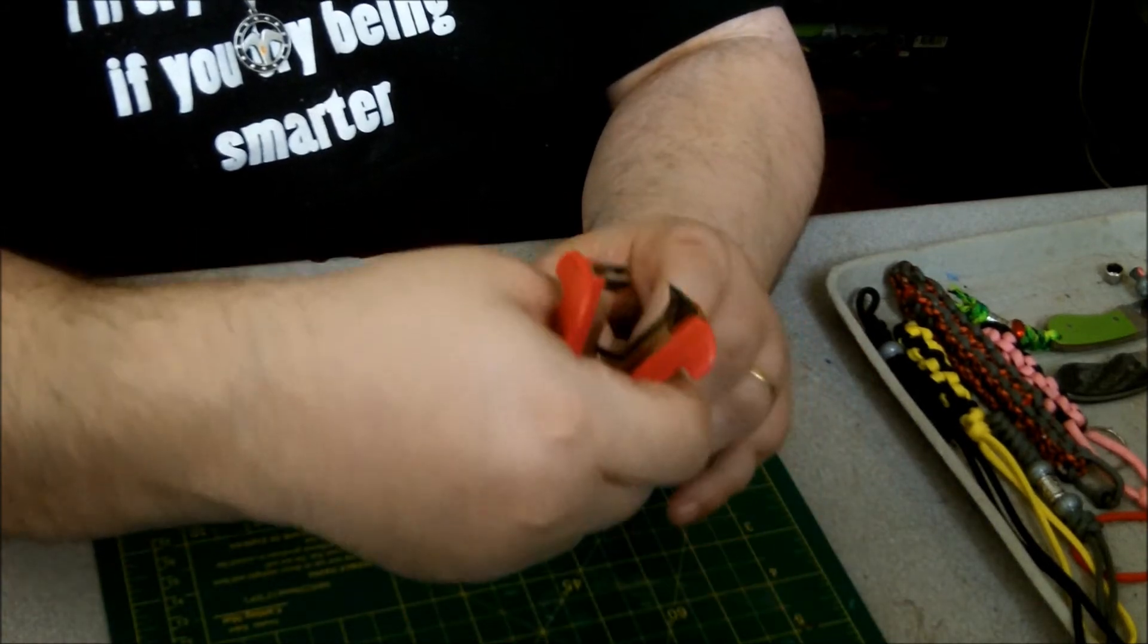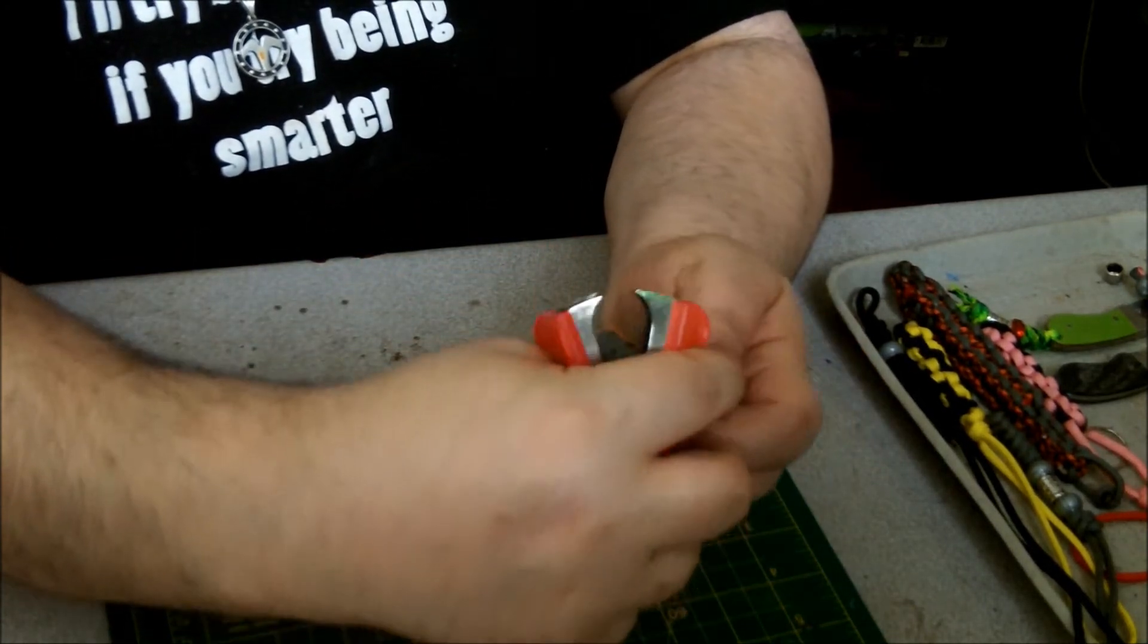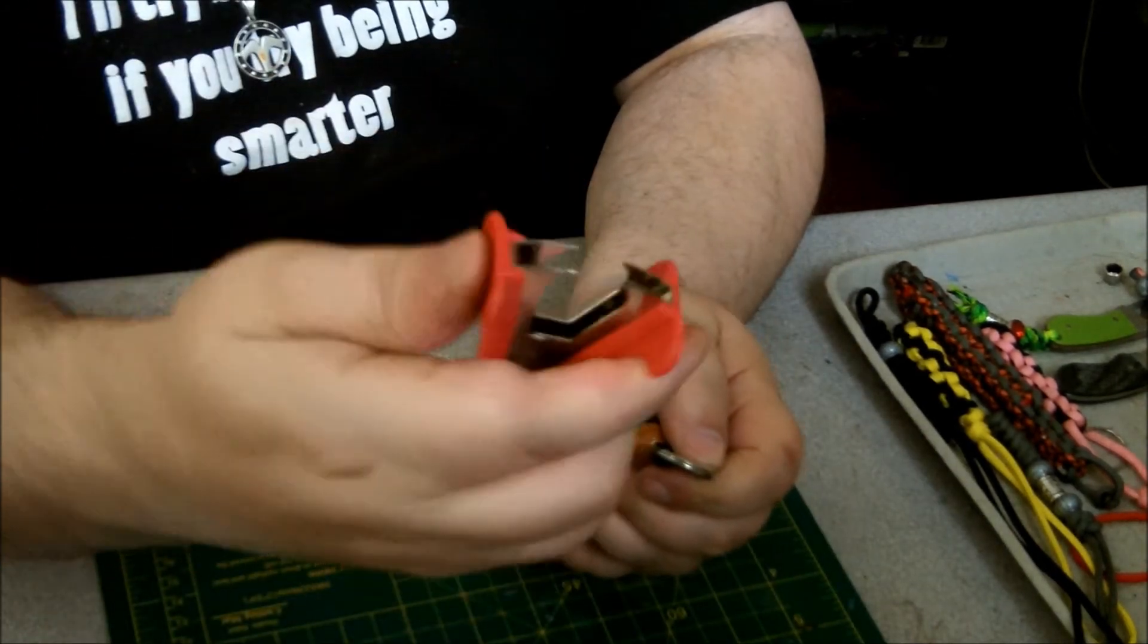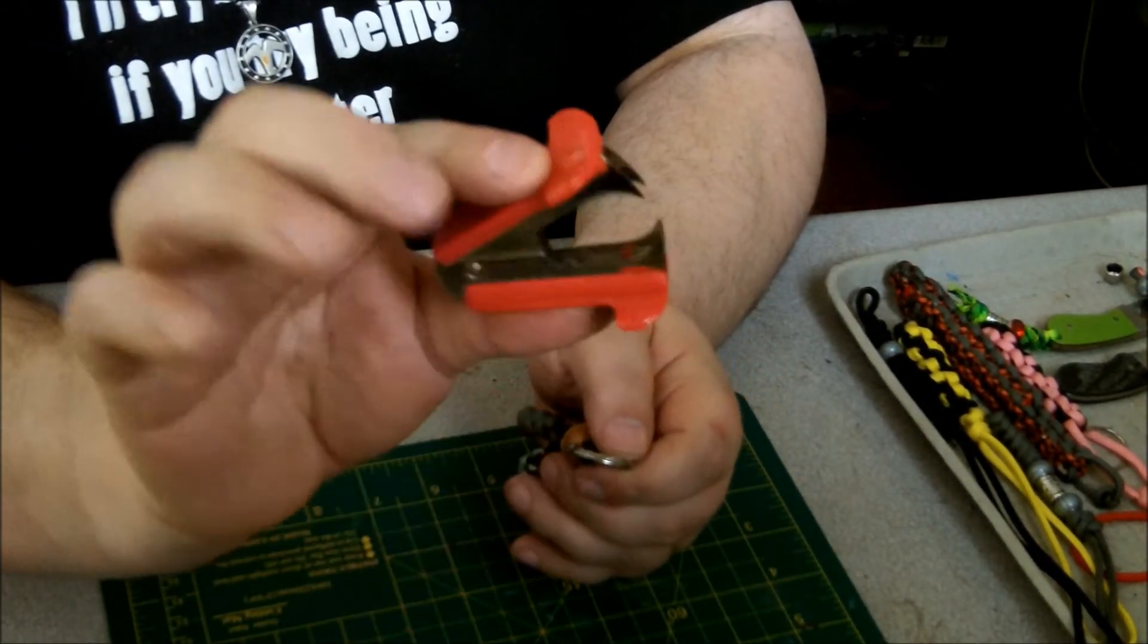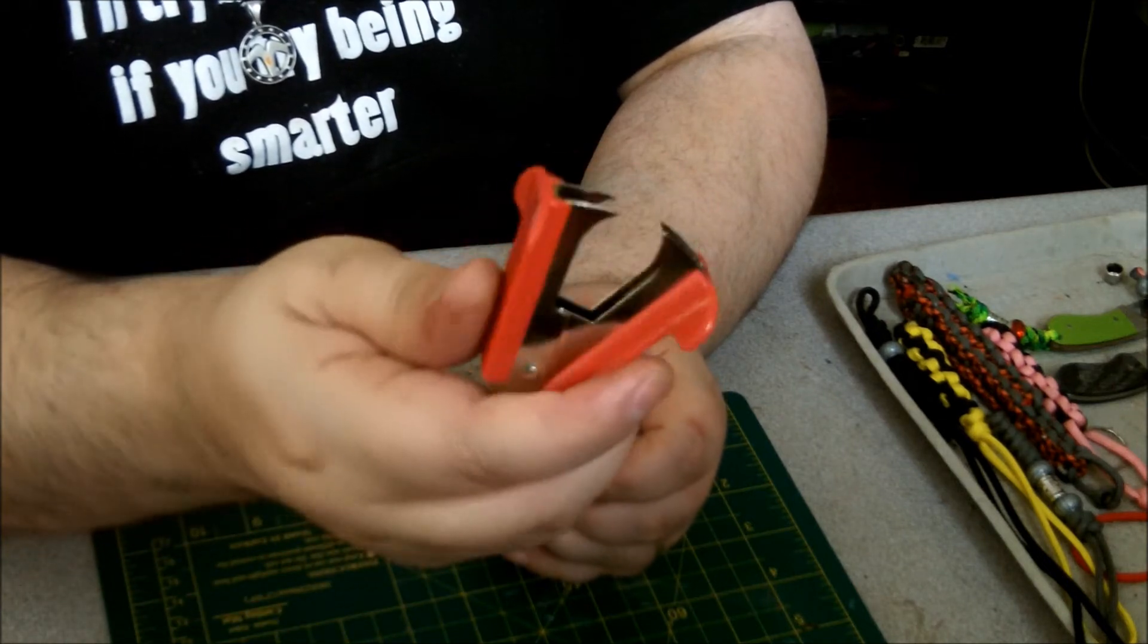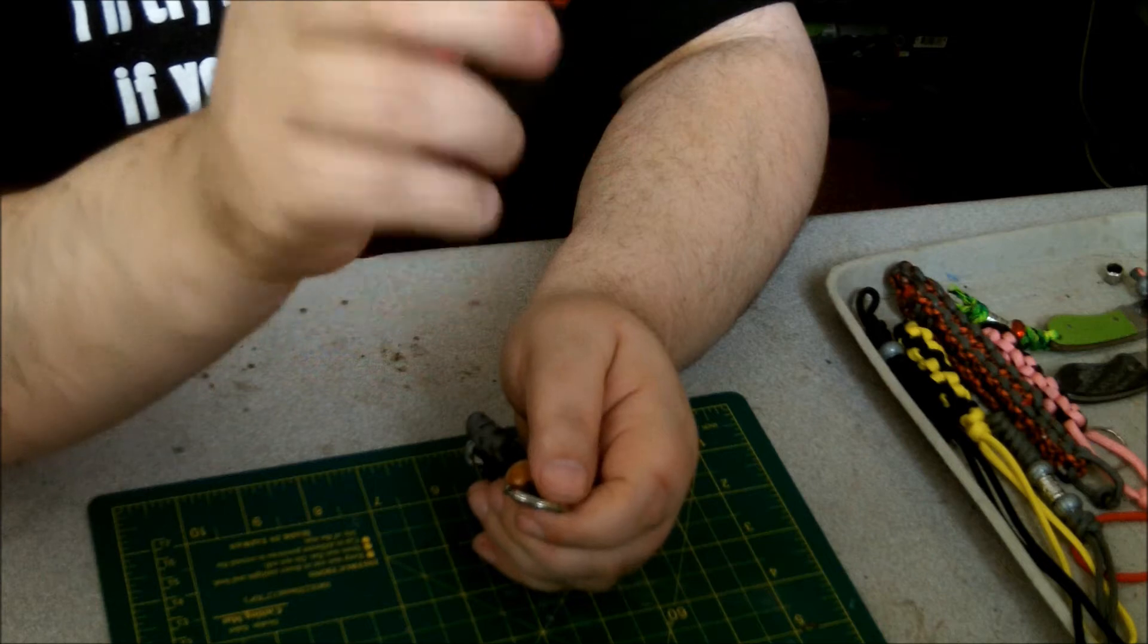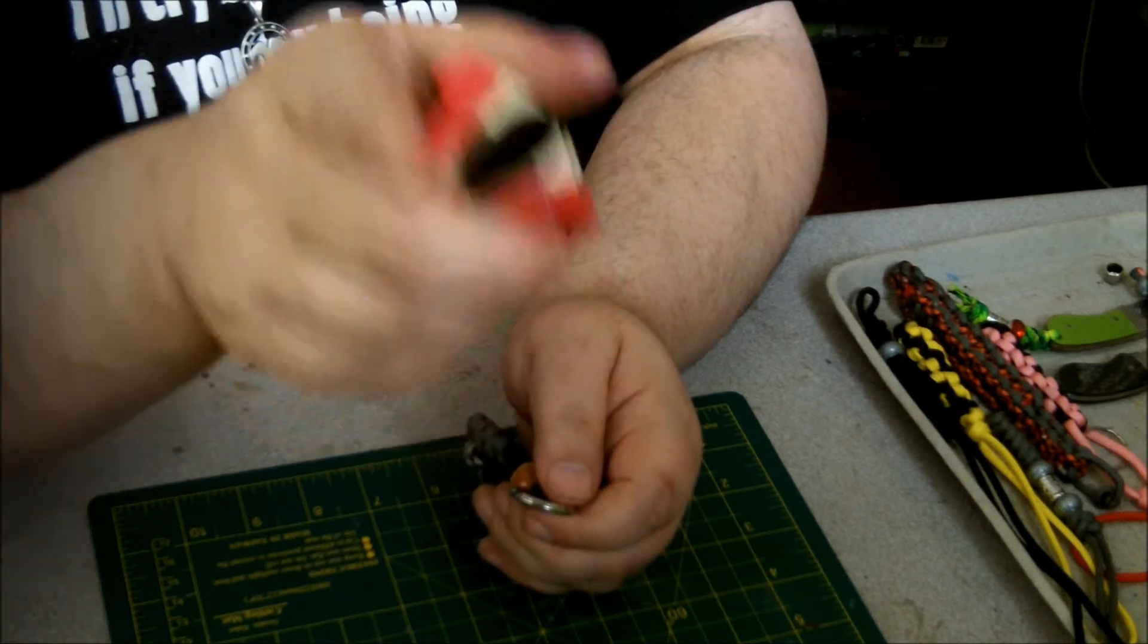So there you go, quick little tool. Add one of these tools to your paracord toolbox, you know, these little staple pullers. There you go. Hope you find it useful. Find your serenity in a mad world. I'm out.